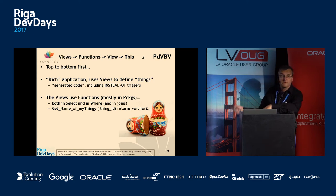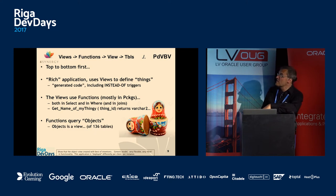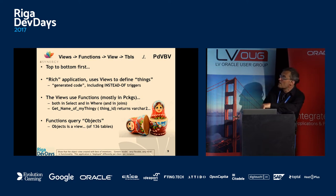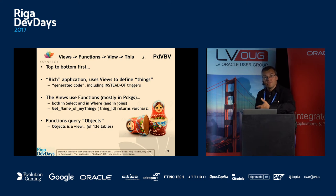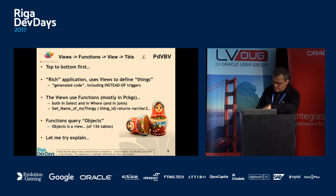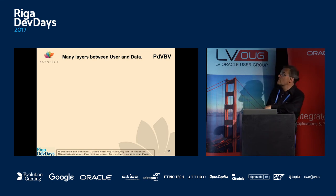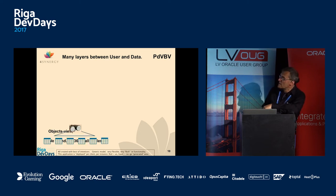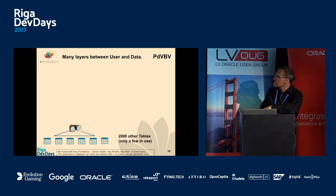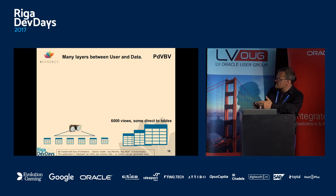The views were using functions, the functions were in packages. We had SELECT and WHERE clauses calling functions all the time — lots of functions named 'get_something_of_my_thingy' with a thing ID returning a string. Basically retrieving strings tens of thousands of times per second, and no amount of hardware can go that fast. There was a view called 'objects' — under that view, 136 tables. A query to that view potentially had to go through all 136 tables.